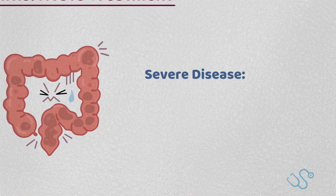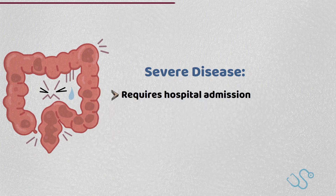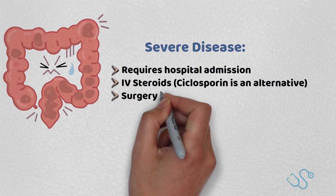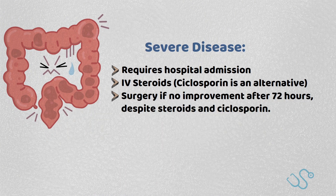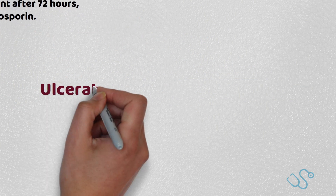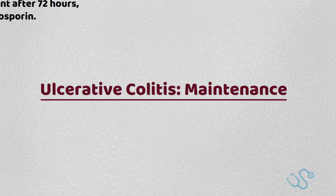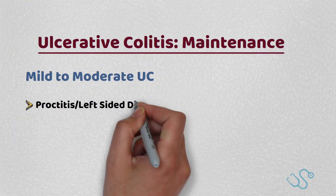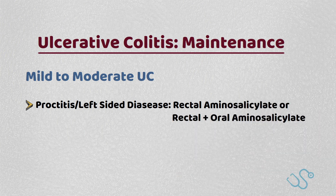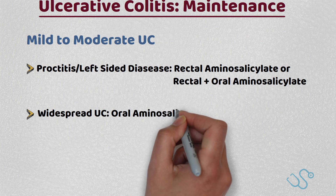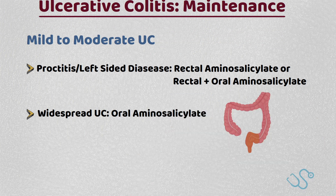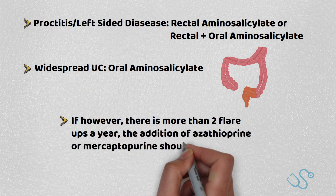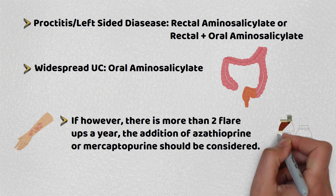If the disease classification is severe, this often requires hospital admission, where IV steroids or IV cyclosporine is considered. If there's no improvement after 72 hours despite optimal therapy, surgery is usually considered. For mild to moderate maintenance therapy, it again depends on the site of disease: for proctitis and left-sided disease, rectal aminosalicylates or rectal plus oral aminosalicylates are used. For widespread UC, oral aminosalicylates alone are used, and if there are more than two flare-ups a year, the addition of azathioprine or mercaptopurine should be considered.